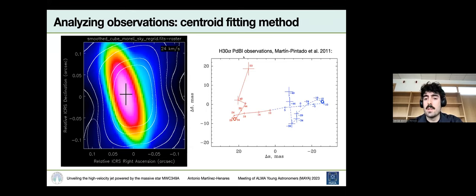This is, for example, what we obtained with the Plateau de Bure observations in 2011. We see, for example, here that the red-shifted emission is essentially located at the left part of the system, while the blue-shifted is at the right part.